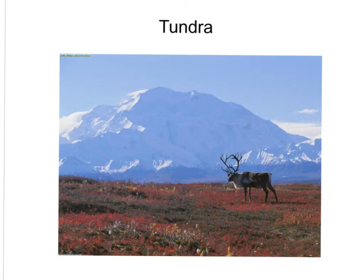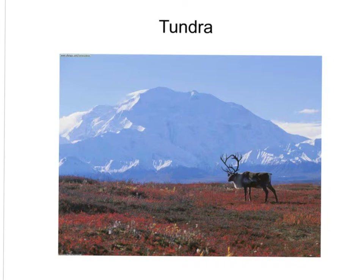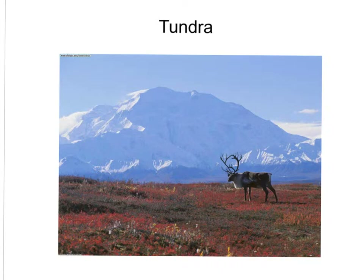The tundra biome occurs beyond the tree line or at very high altitudes. The plants in the tundra are very compact, shrubby, mat-like, and dwarf. In the Arctic tundra, there's permafrost, so the ground is continually frozen and plants cannot penetrate very far into the soil. The tundra can also have extremely low precipitation and be very dry. However, where there is a permafrost layer, it blocks drainage, keeping the soil soggy. In the Arctic, summer days are very short, so plants and animals have made many adaptations to deal with these unique tundra conditions.